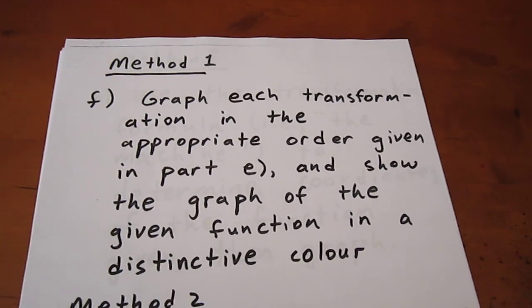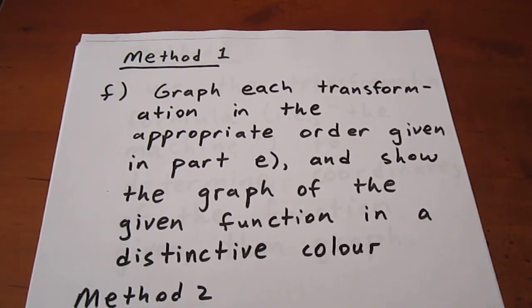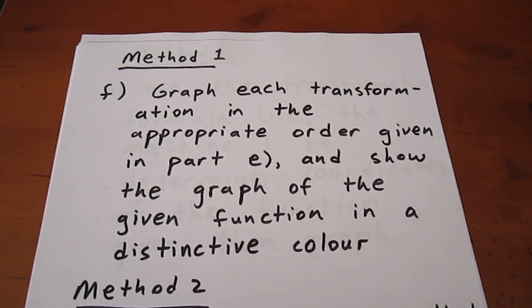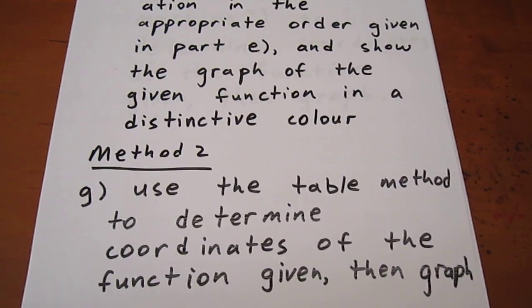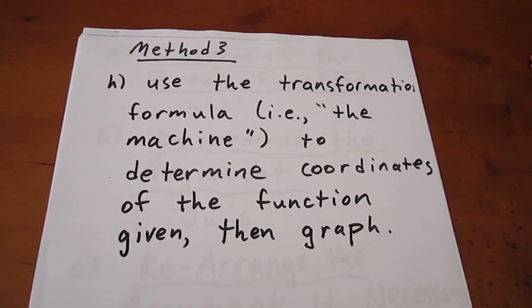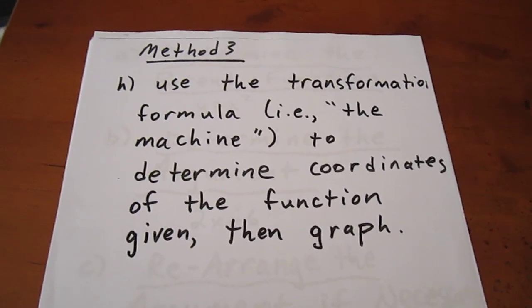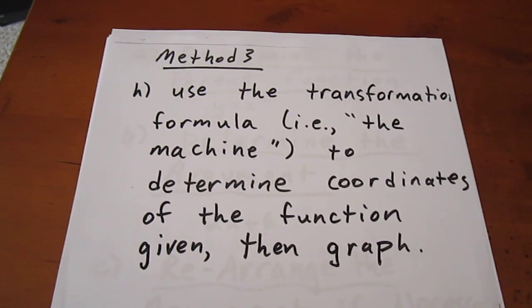We're then going to graph the curve in three different ways. Method 1, showing each transformation. Method 2, using a table to determine coordinates. And Method 3, using the transformation formula, also known as the machine, to determine coordinates of the function.